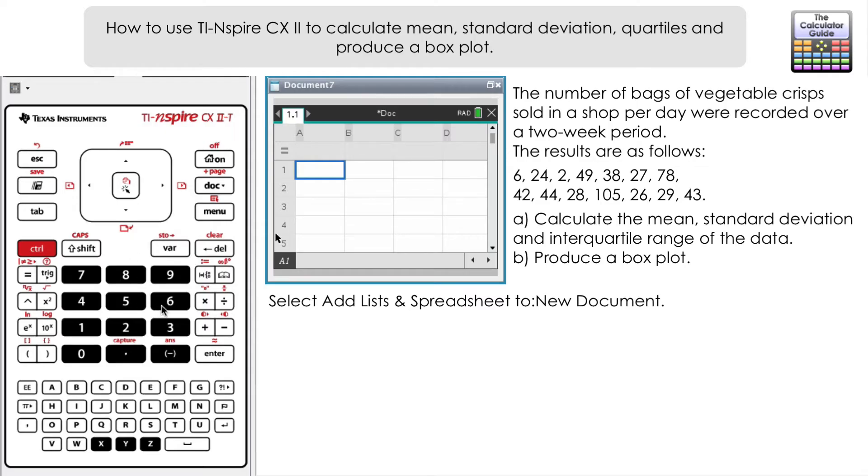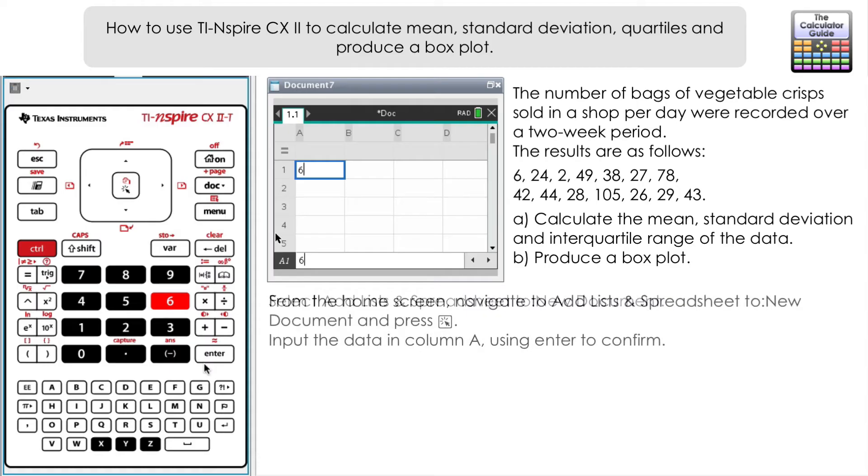Select Add Lists & Spreadsheet and that will open up a document for us. Essentially it's set out like a spreadsheet. We're just going to use the first column to input our data. Start inputting your data: 6, 24, and so on, and press enter each time. It should automatically scroll down to the next cell below.